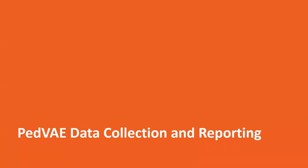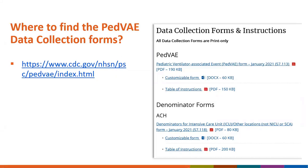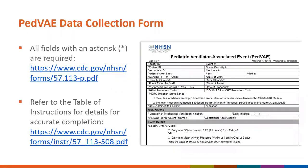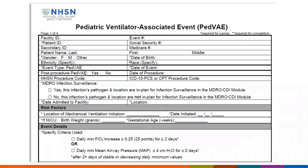PVAE data collection forms can be found on the PVAE resource page linked in the presentation. Scrolling to the data collection forms and instructions section, you'll find the PVAE data collection form and the table of instructions, which provides information for accurate completion of the form. All fields with an asterisk are required. Required information includes patient information, location of mechanical ventilation initiation, the date mechanical ventilation was initiated, and for NICU patients, birth weight and gestational age. You also need to document the parameter in which the event was identified — FiO2 or MAP.